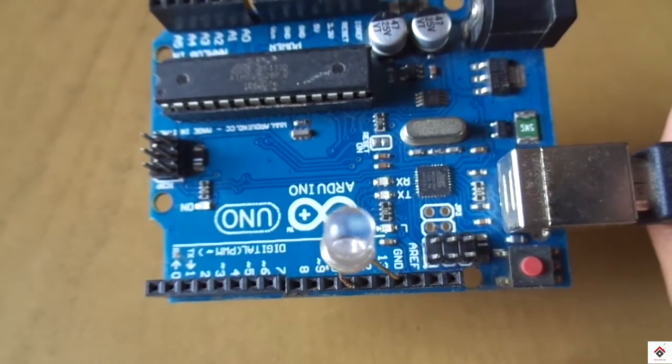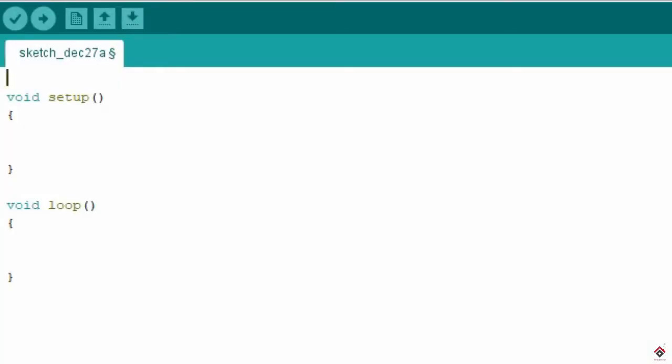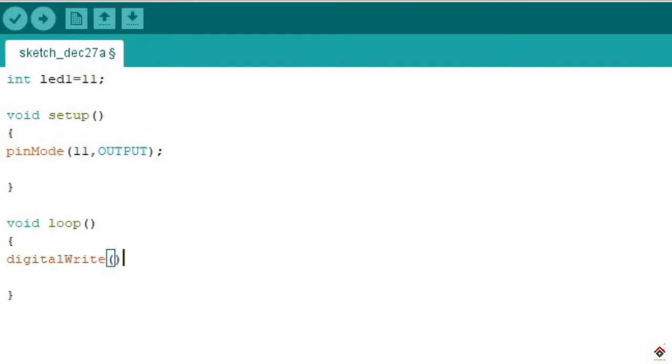So moving on to the coding part. Here we have used one LED that is connected to pin 11. So I'll declare it as int. Since the LED is an output device we'll make it as an output using pinMode. So in case of normal LED blink program we use the digitalWrite function to turn on LED, so LED 1 high, and to turn off LED we use it as low. So this is in case of normal LED on off.